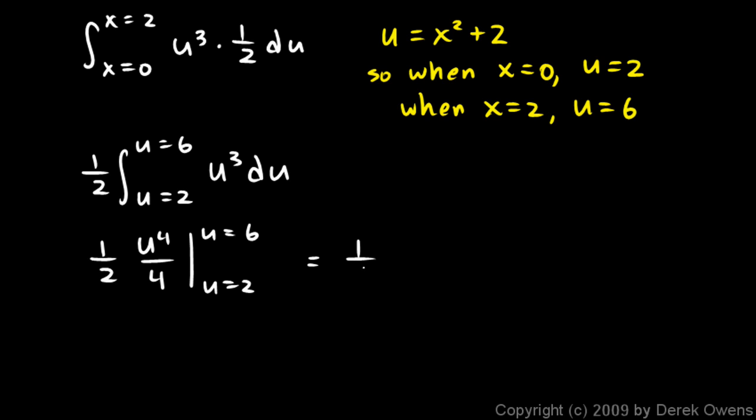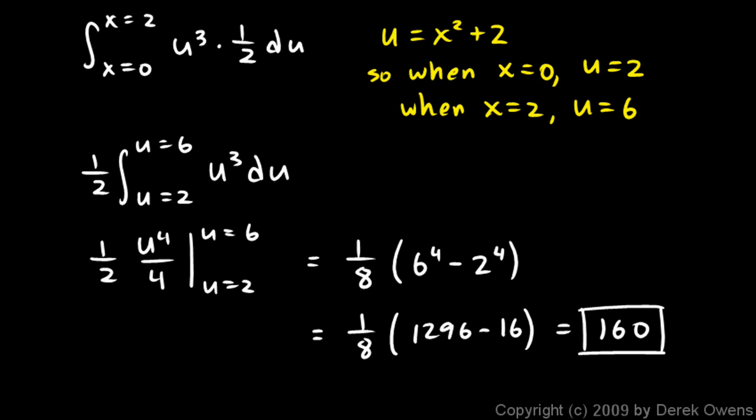So let's do that. This is going to be a 1/8—I'm just combining the 2 and the 4 in the denominator right there. 1/8 times 6⁴ minus 2⁴. And that's 1/8 times 1296 minus 16. And you work that out and it comes out to 160, which is just what we got before. Pretty cool.